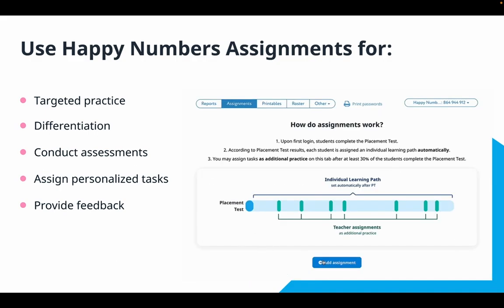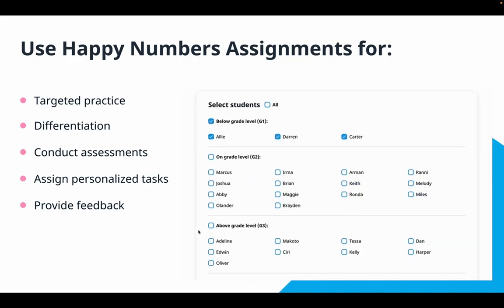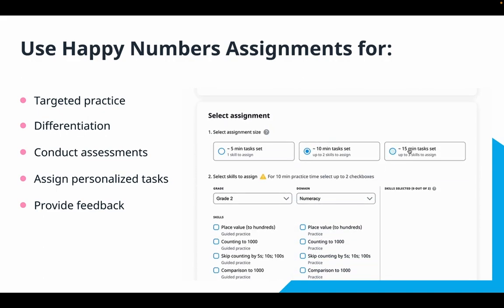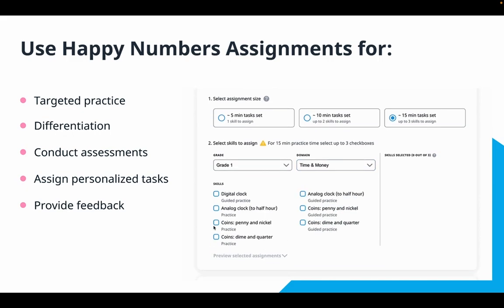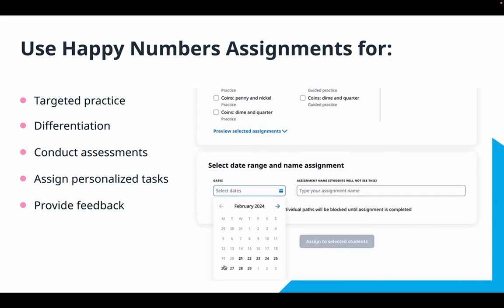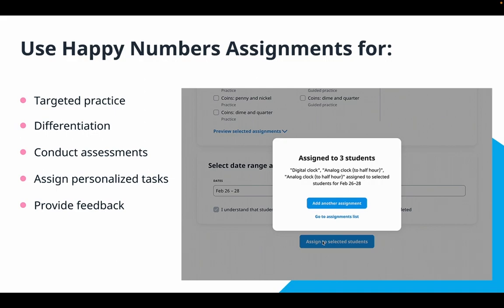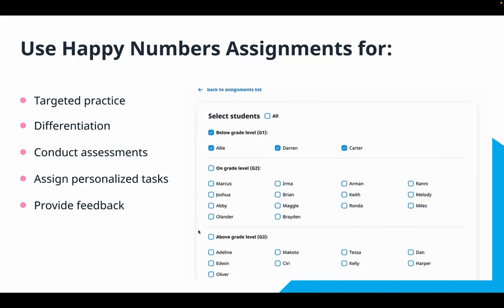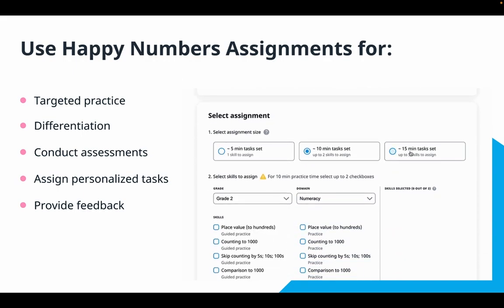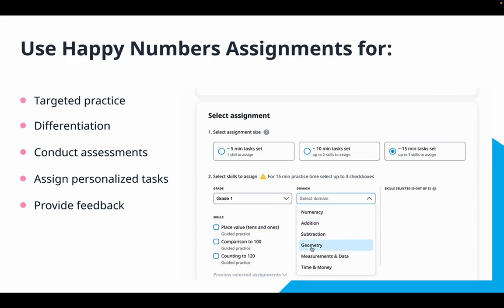Differentiation: you can group students based on their level of understanding and assign tasks accordingly. For example, students who are struggling can be grouped together for targeted instruction, while more advanced students can work independently on more challenging assignments. You can also conduct assessments by using the assignments to identify and double-check each student's individual strengths and areas for improvement. It may be helpful before introducing a new topic in class, which requires some prerequisite knowledge as well.